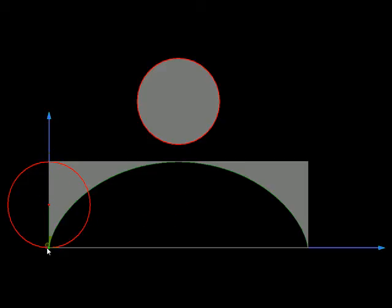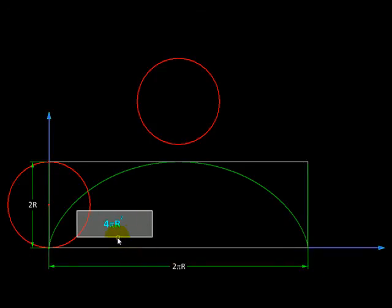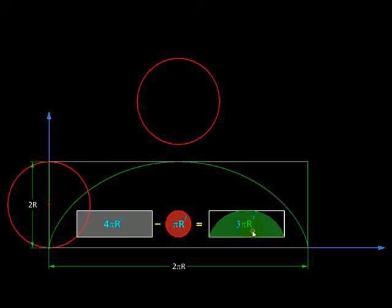So we will start by dimensioning the rectangle over here. Its height is going to be two times the radius of this circle. Its length is going to be 2πr, the circumference of the circle. So that's the area of the rectangle. From it we are going to subtract area of the circle πr² to get the area under the cycloid as 3πr².